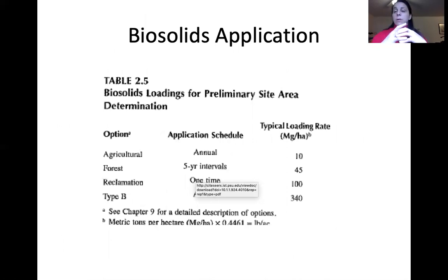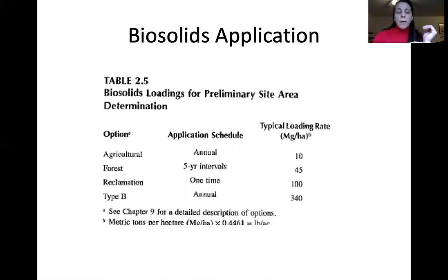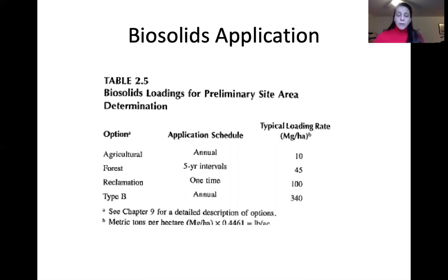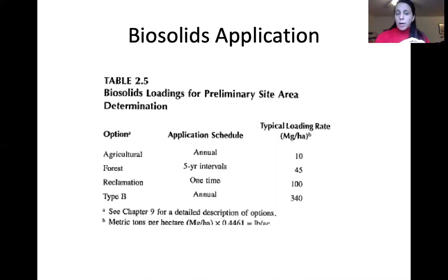Biosolids are the solid component after liquid-solid separation. They may be treated or composted before application. For agriculture, biosolids are often applied throughout the year at typical loading rates of metric tons per hectare. In forests, application is done at intervals — moving to different stands — allowing a higher loading rate. For reclamation land, a single one-time application builds up the soil organic matter profile. Type B biosolid application for crop growth can also use higher loading rates.